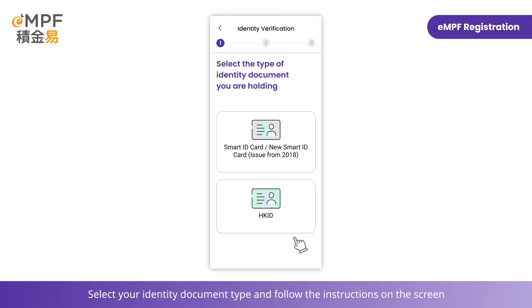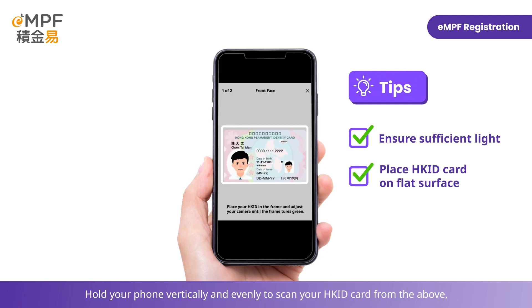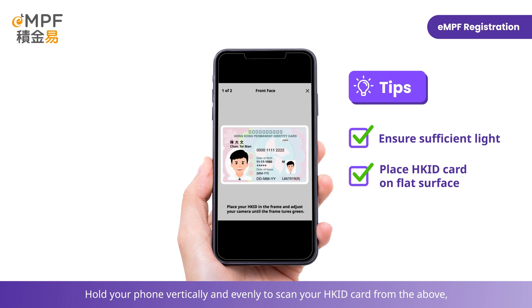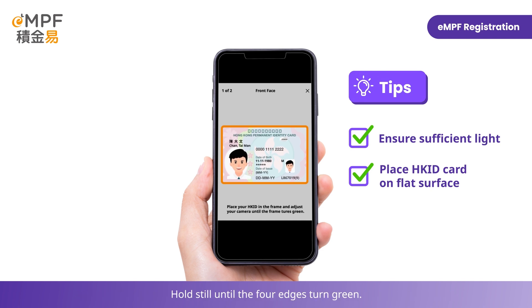Select your identity document type and follow the instructions on the screen to scan your Hong Kong ID card and proceed to facial recognition. First, ensure that you are proceeding in an environment with sufficient light. Place your Hong Kong ID horizontally on a white background. Hold your phone vertically and evenly to scan your Hong Kong ID card from above, and adjust the angle to put your Hong Kong ID card inside the white frame on your screen. Hold still until the four edges turn green.